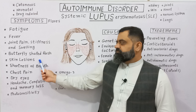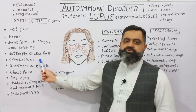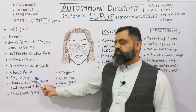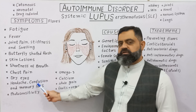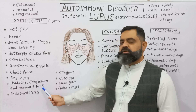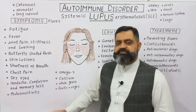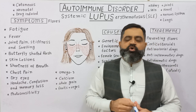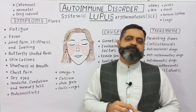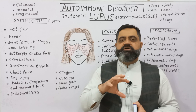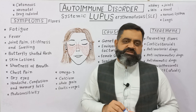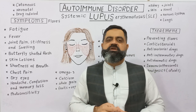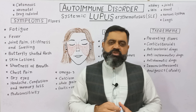Other symptoms include skin lesions especially upon exposure to sunlight, shortness of breath, chest pain, dry eyes, headache, confusion and memory loss, photosensitivity, and fingertips becoming blue or white during winter season. These are some of the major symptoms, though they can vary from person to person in both type and severity.